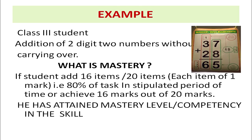Here is an example to clarify mastery versus skill. A class 3 student can do addition of two-digit numbers without carrying over. In this case, mastery means if a student completes 16 out of 20 items — each carrying one mark — meaning they achieve 80% of the task in the stipulated period of time, or achieve 16 marks out of 20, then we can say they have attained mastery level or competency in the skill.